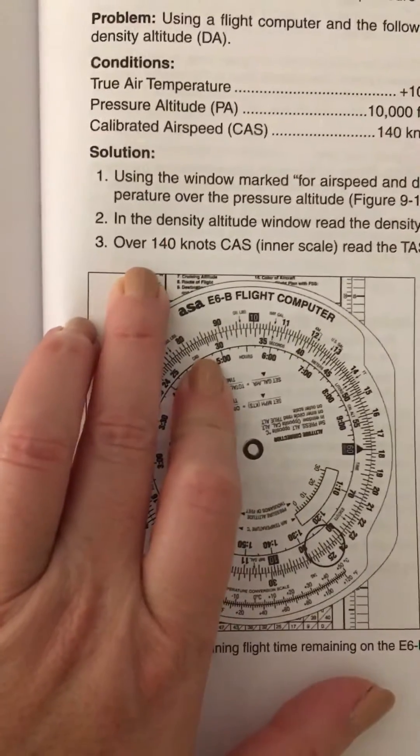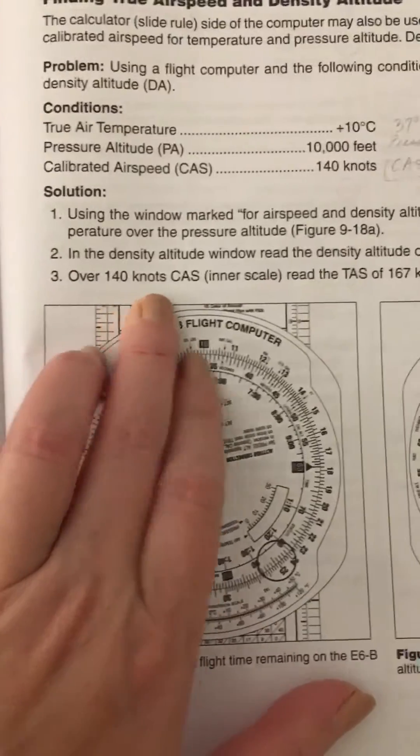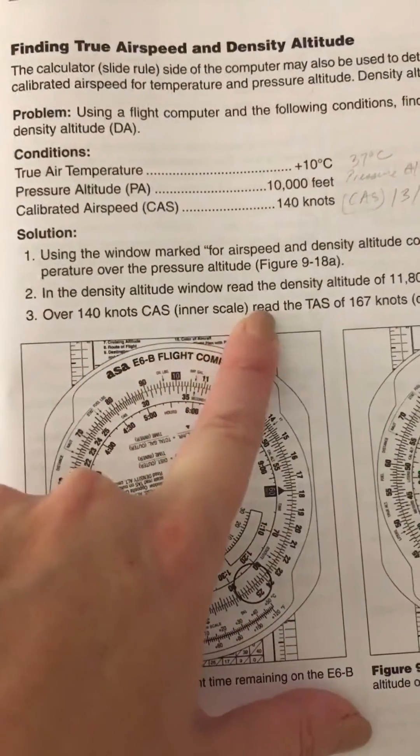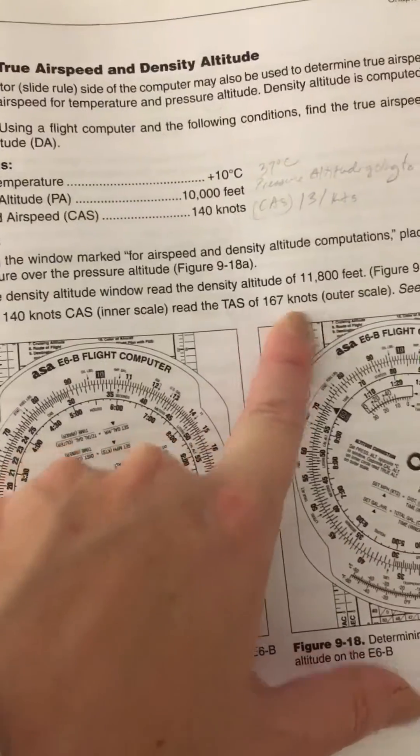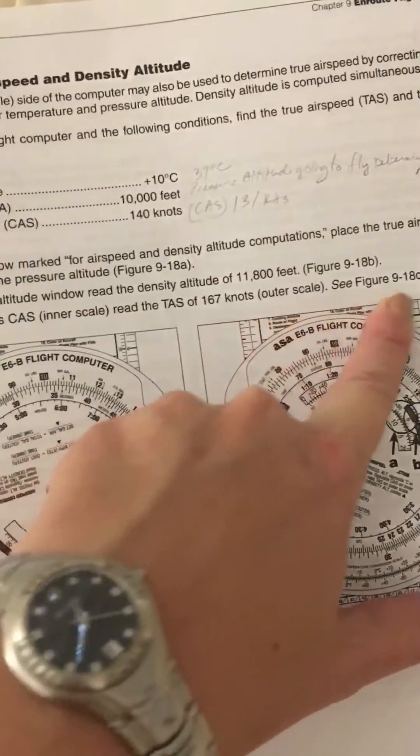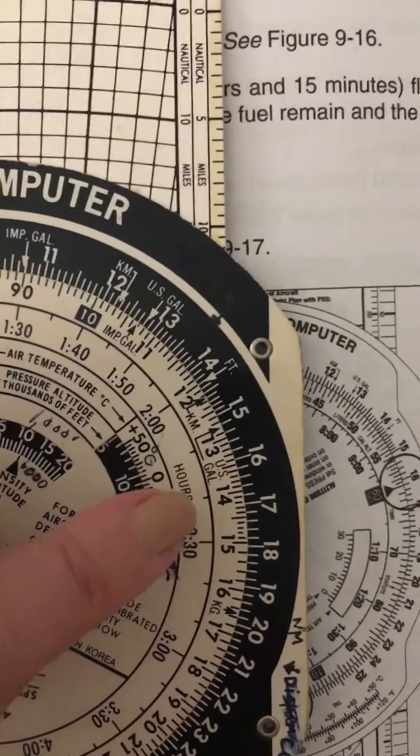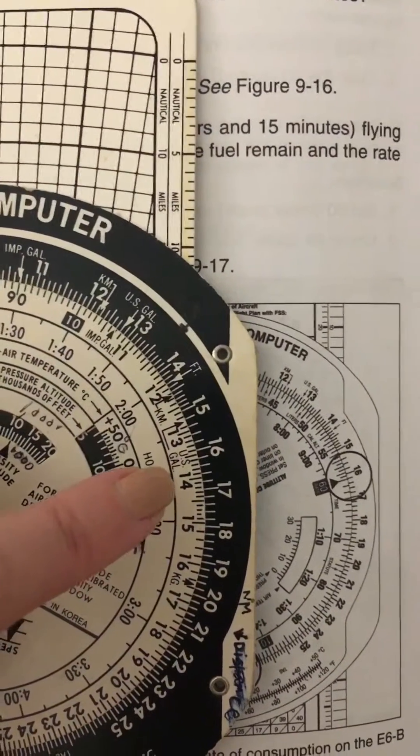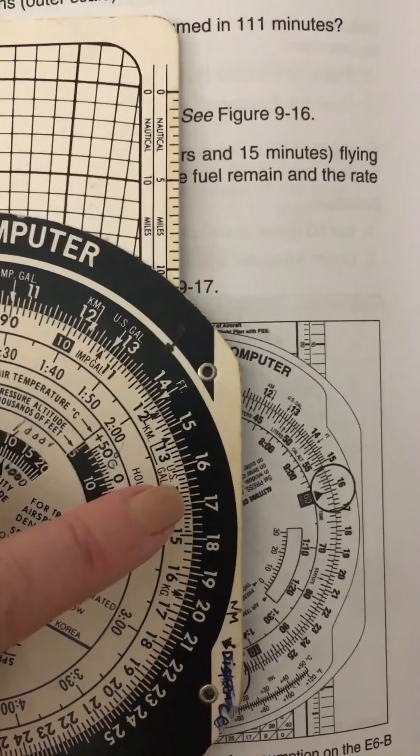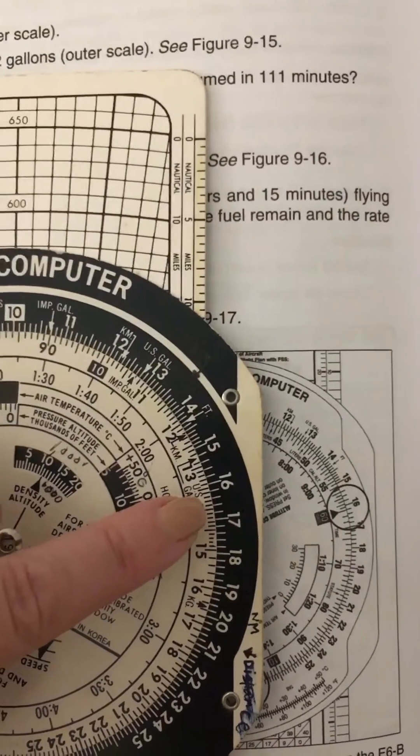Then we go over to 140 knots calibrated airspeed on the inner scale and read the true airspeed of 167 knots on the outer scale. We look on the inner scale for 140, which gives us a true airspeed of 167 knots.